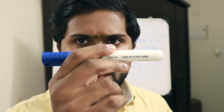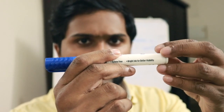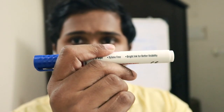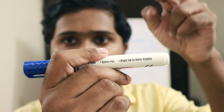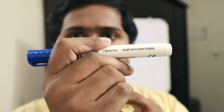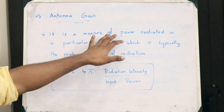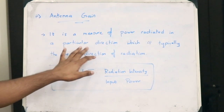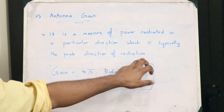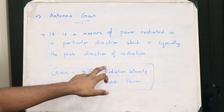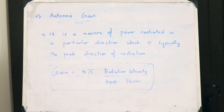A particular antenna is required to transmit electromagnetic waves in a particular direction — the direction through which that antenna is intended to transmit data. If this antenna is intended to transmit data in this direction, then there is no point in it transmitting data upward, downward, to the sides, or towards the back. Antenna gain is a measure of the power that is radiated in a particular direction, which is typically the peak direction of radiation. The antenna gain has an expression given by 4π multiplied by the radiation intensity divided by input power.